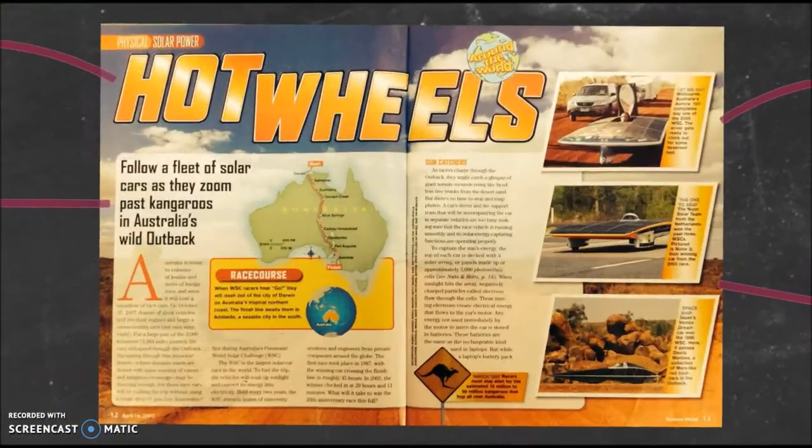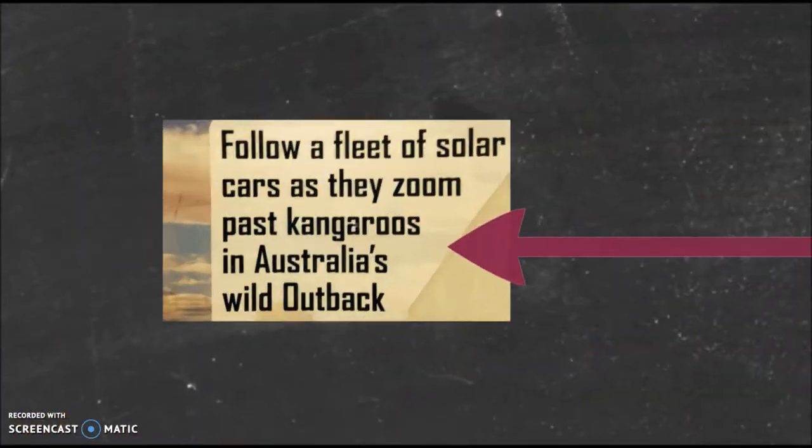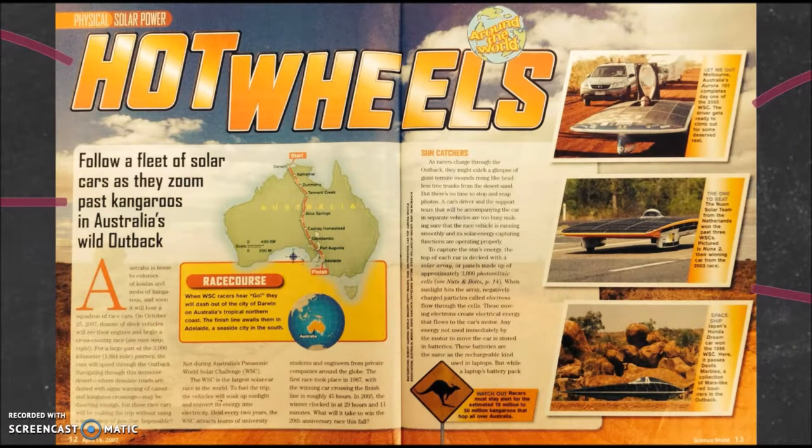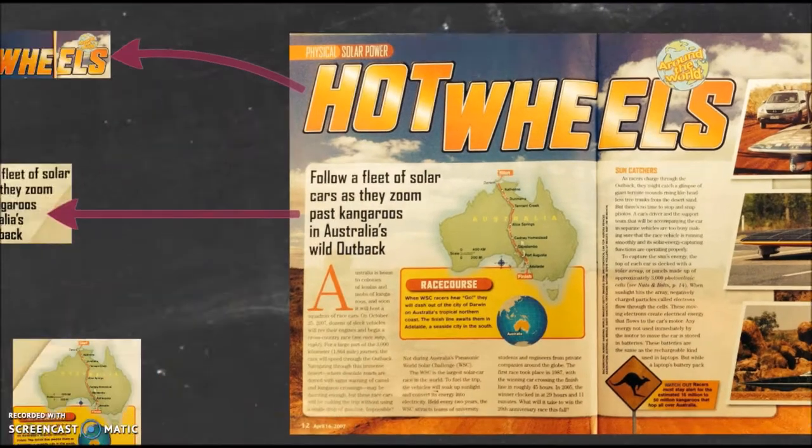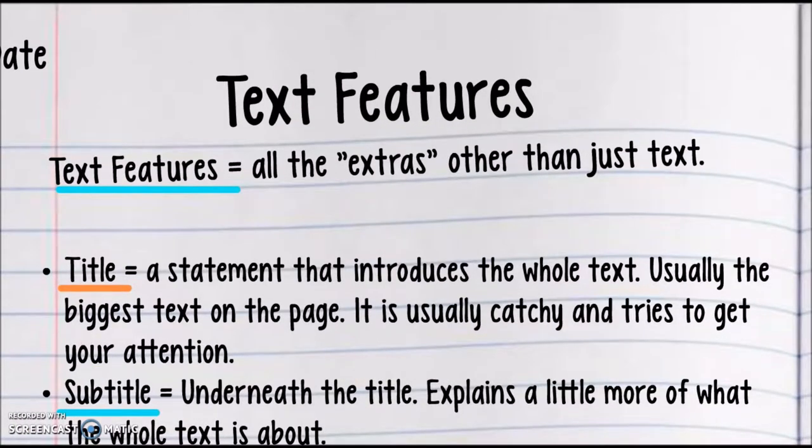Here we go. What's the next thing we're going to look at? What's the next thing that kind of stands out to me? What is that underneath that? Says Hot Wheels is the title, then what is this called? Follow a fleet of solar cars as they zoom past kangaroos in Australia's wild outback. What is this called when we're talking about text features? That is correct. It is the subtitle underneath the title, and it explains a little more of what the whole text is about. So you get this catchy title, and then you get a subtitle under it. And subtitle just gives you a little bit more explanation.